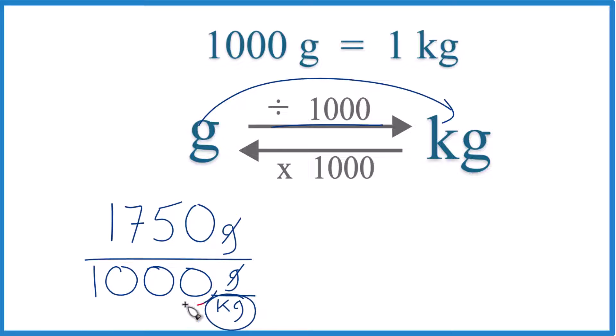Let's move our decimal over 1, 2, 3. So that gives us 1, and then 1, 2, 3. We end up with 1,750 grams equals 1.75 kilograms.